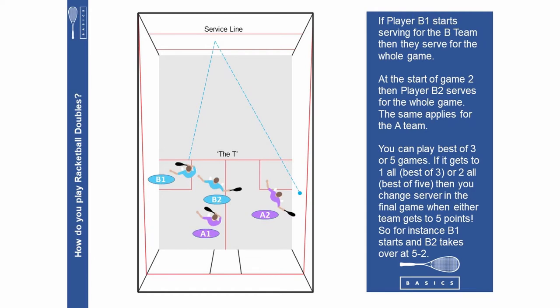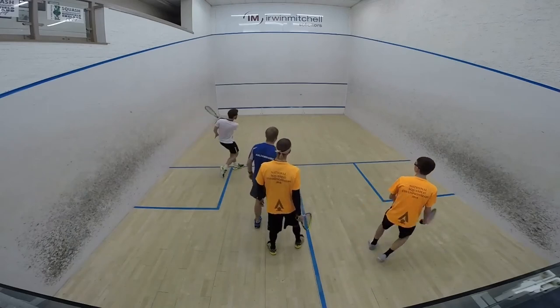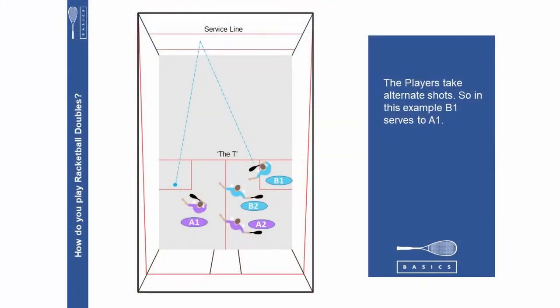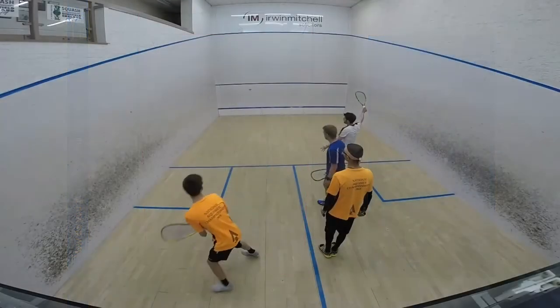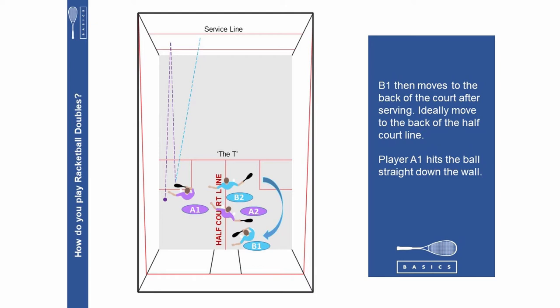The players take alternate shots. So in this example B1 serves to A1. B1 then moves to the back of the court after serving, ideally move to the back of the half court line. Player A1 hits the ball straight down the wall. After hitting the ball player A1 moves to the back of the court.